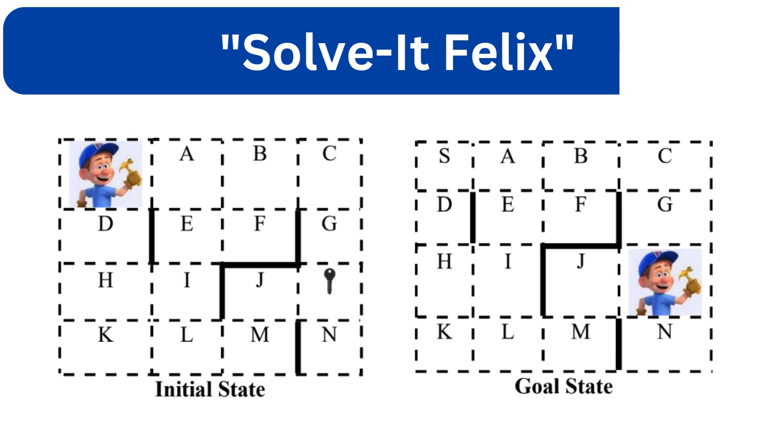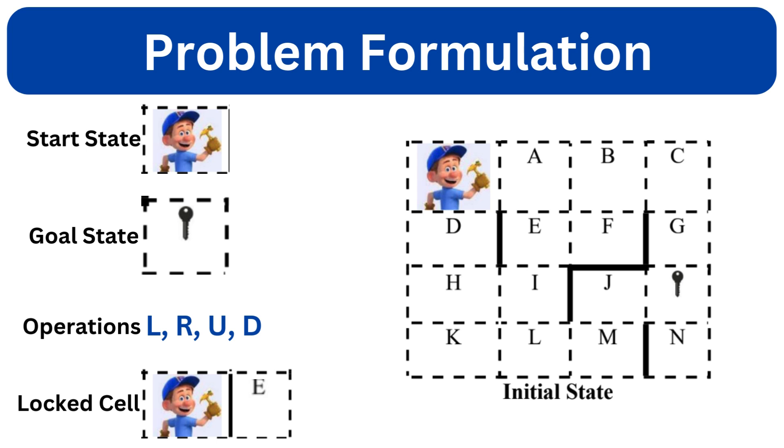First let's understand the problem and how can we represent it as a graph. We are given an n by n grid where Felix, our agent, starts at position S and needs to search the exit cell that contains the key, which is actually the goal state. Each state in the problem is a position (x,y) on the n by n grid. Start state is the given initial position of Felix noted by S. Goal state is the exit cell that contains the key.